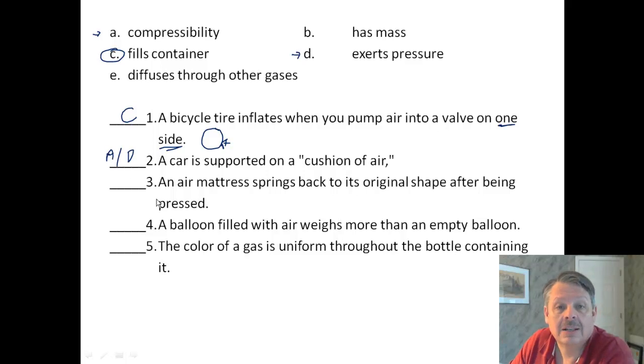An air mattress springs back to its original shape after being pressed. That's very much compressibility because you're compressing the air and then it's bouncing back, so that would be A. But also it exerts pressure on the inside of the mattress. I would say that could be either A or D. I would focus on A for this one and D for number two.